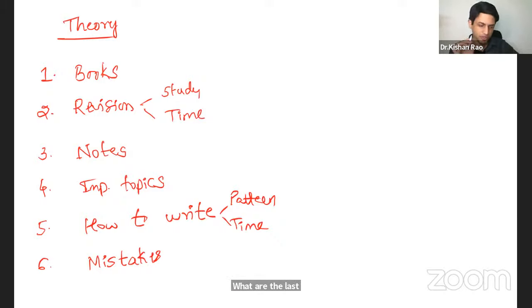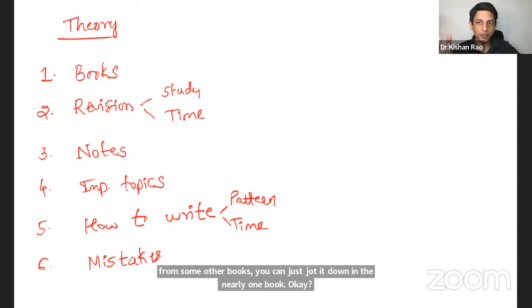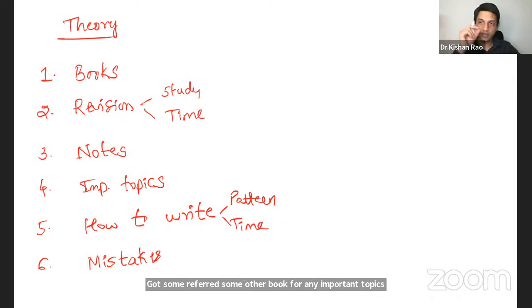Coming to the notes, I am not a great fan of note making. Instead, what you can do is in the textbook itself, you can highlight the important words or important sentences. You can highlight or underline. Or if you have read from some other books, you can just jot it down in any one book. You can have some reference, some other book for any important topics. What are the extra points given in those books or any from videos or anywhere? You can jot it down in one book so that it will be easy for the last minute revision.